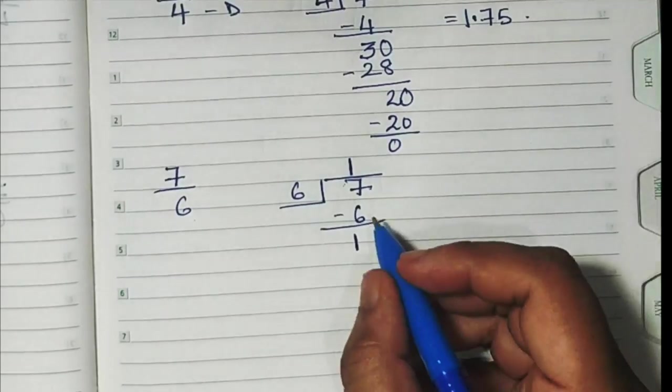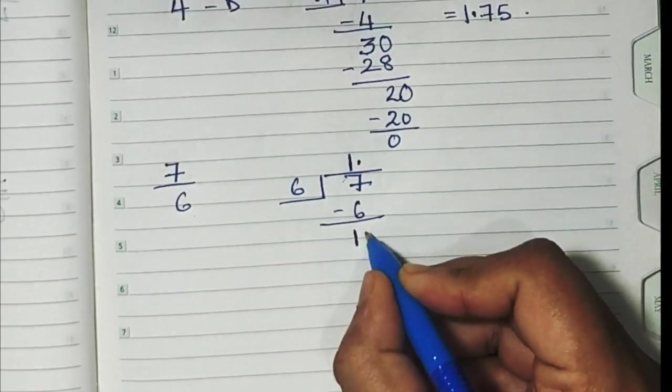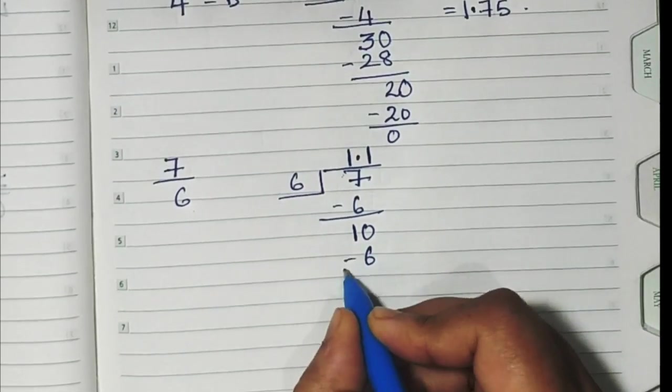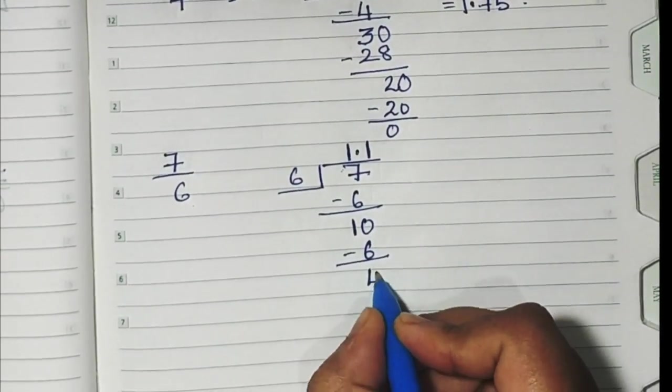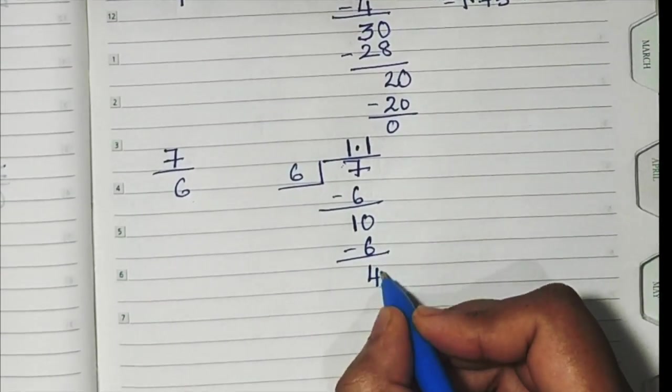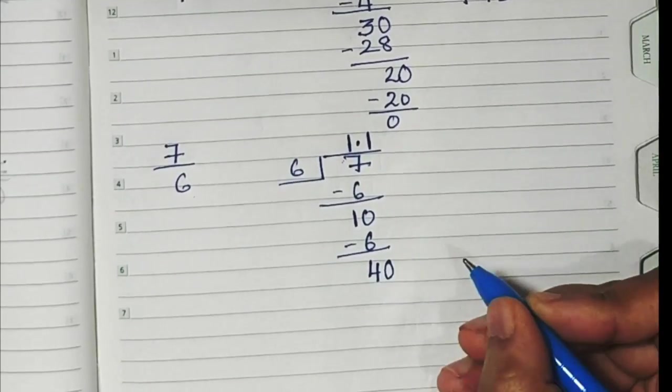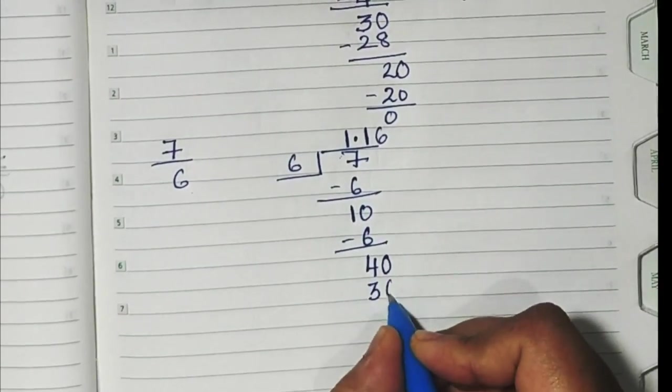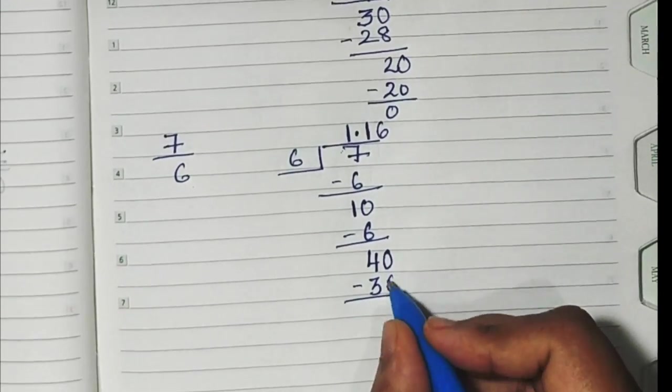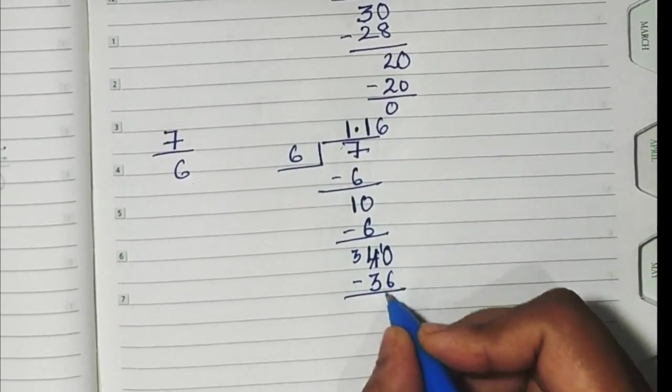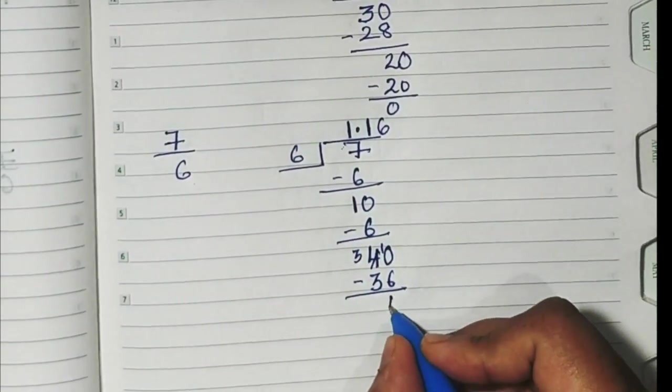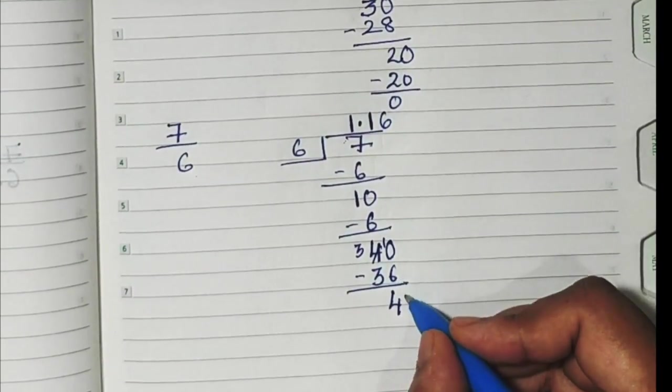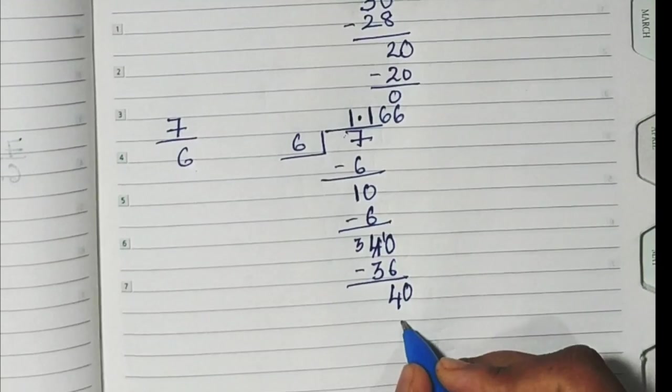Take a point here and take a 0 here. Again, 6 ones are 6, 4 remains down. 10 minus 6 is 4, take a 0 here. 6 sixes, 36. Again, if you take 30 from 36, 10 minus 6 is 4.